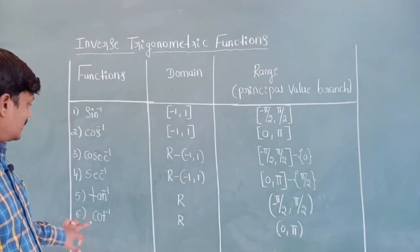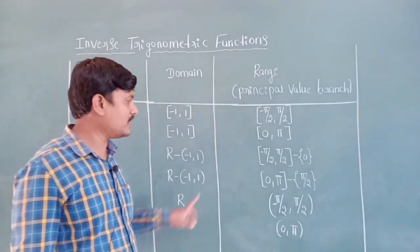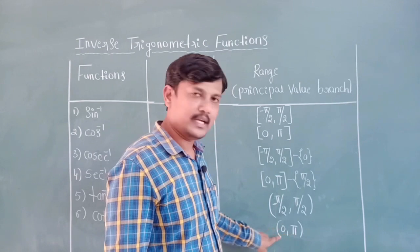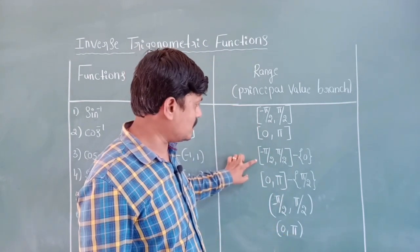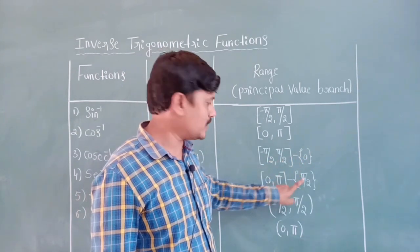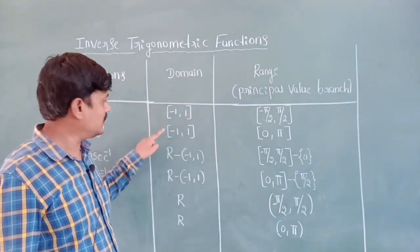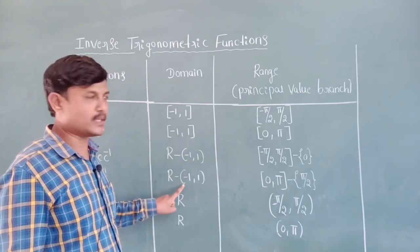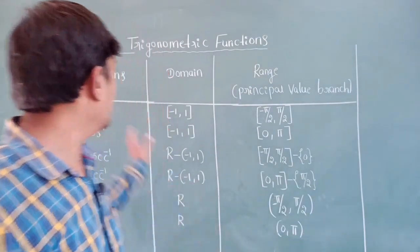Last one: cot inverse. Domain is R, real numbers. Range is zero to pi — it is a closed interval. To summarize interval types: sine inverse range is closed, cosec inverse range excludes zero, sec inverse range excludes pi by two, and tan inverse range is open interval.